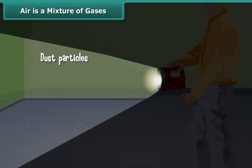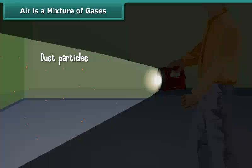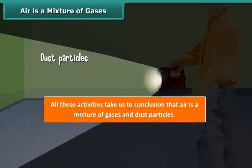Put your torch light on while walking through a dark place. You will see tiny shining particles moving in the beam of torch light. These are the dust particles present in air. All these activities bring us to the conclusion that air is a mixture of gases and dust particles.